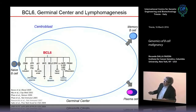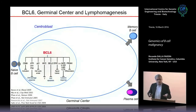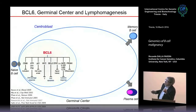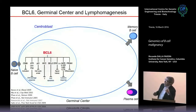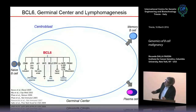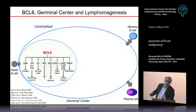BCL-6 represses BCL-2, enforcing a pro-apoptotic environment which will be reverted later. It represses a number of receptors, signal transducers, and nuclear effectors of signals from cytokines and chemokines. It represses PRDM-1, also known as BLIMP-1, which is the master regulator of plasma cell differentiation — no BLIMP-1 in mice means no plasma cells. So collectively, what BCL-6 is telling the cell in this first phase is: proliferate; don't worry too much about DNA damage, it's physiology; don't listen to signals from the environment; you cannot differentiate or activate; just proliferate and remain a B cell.